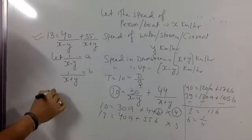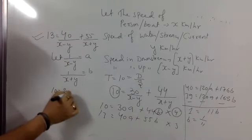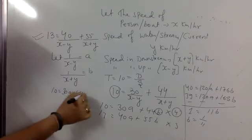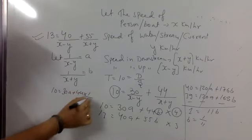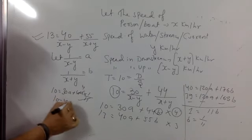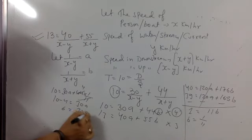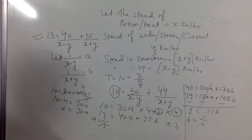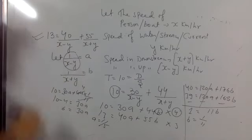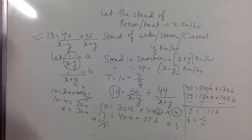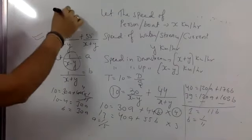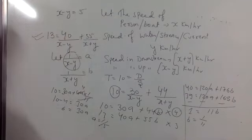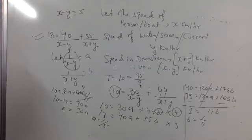So can I say 10 is equal to 30a plus 44b ki jagah 1 by 11? Yes sir. So 10 minus 4, 30a, 6 is equal to 30a, a 1 by 5? Yes sir. Now a ko kuch maana tha? 1 upon x minus y. So can I say therefore x minus y equals to 5?